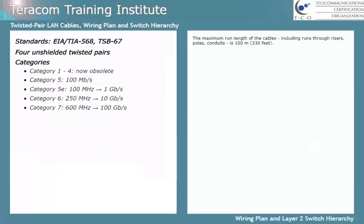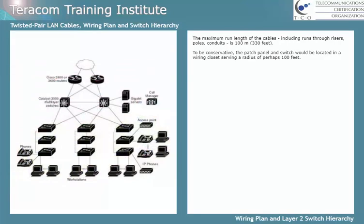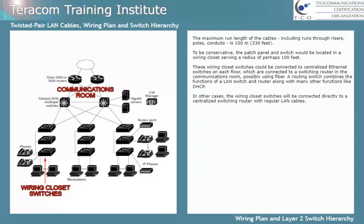The maximum run length of cables, including runs through risers, poles, and conduits, is 100 meters. To be conservative, the patch panel and switch would be located in a wiring closet serving a radius of perhaps 100 feet. These wiring closet switches could be connected to centralized Ethernet switches on each floor, which are then connected to a switching router in the communications room, possibly using fiber. A switching router, or routing switch, combines the functions of a LAN switch and a router, along with many other functions like DHCP. In other cases, the wiring closet switches will be connected directly to a centralized switching router with regular LAN cables.